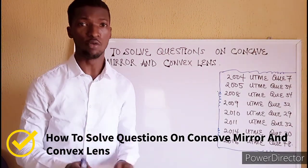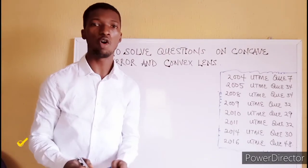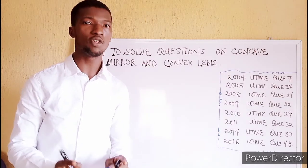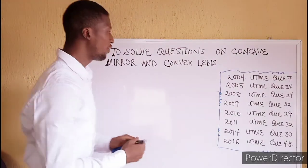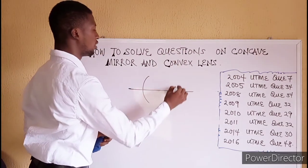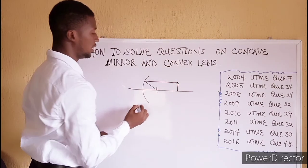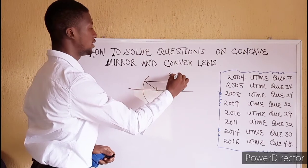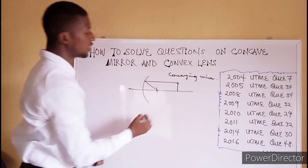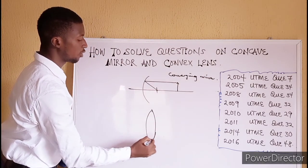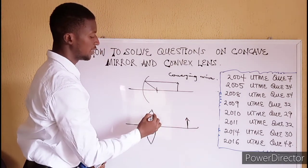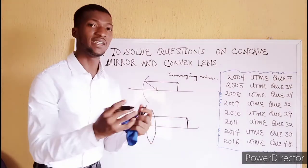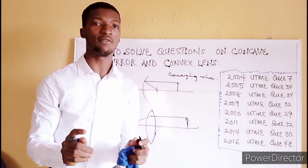When we talk about concave mirror and convex lens, it is necessary for you to know that a concave mirror can also be called a converging mirror, as well as a convex lens can also be called a converging lens. A concave mirror deals with the phenomenon of reflection, while a convex lens deals with the phenomenon of refraction. When a ray of light is incident on the concave mirror, it is reflected inwardly to meet at a point — that is why it is called a converging mirror. Similarly, when a ray of light is incident on a convex lens, it is refracted inwardly, which is why we call it a converging lens.